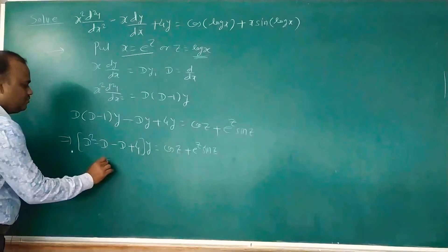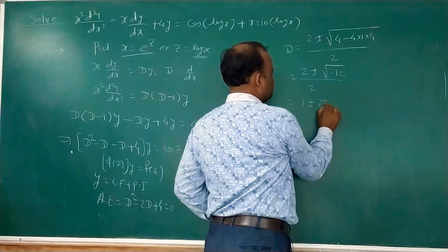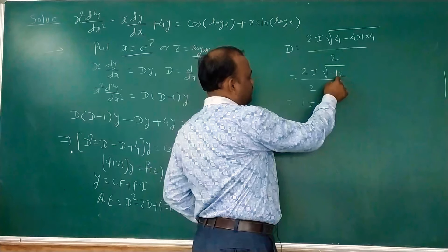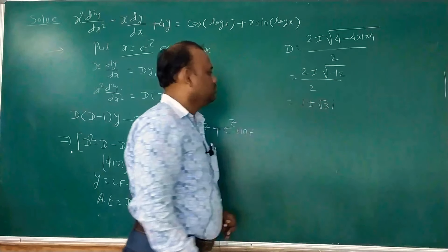For the complementary function, the auxiliary equation is D² − 2D + 4 = 0. Using the quadratic formula with a=1, b=−2, c=4: D = (2 ± √(4−16))/2 = (2 ± √(−12))/2 = 1 ± √3·i. So the roots are α ± iβ where α=1 and β=√3.